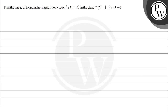Let's read this question: Find the image of the point having a position vector of i-cap plus 3j-cap plus 4k-cap in the plane r-vector times (2i-cap minus j-cap plus k-cap) plus 3 equals 0.